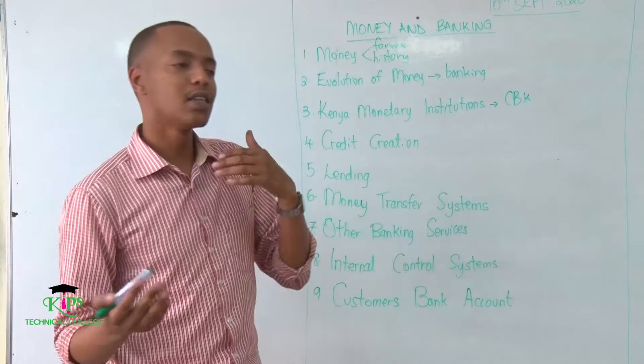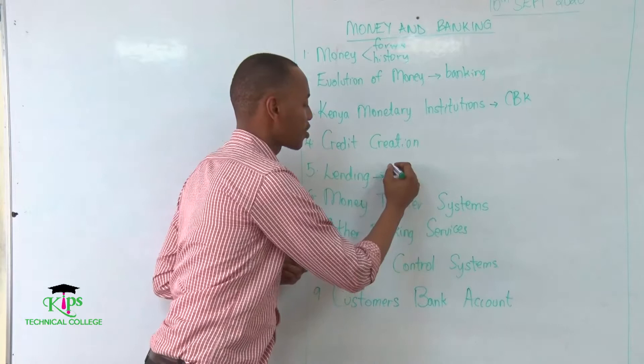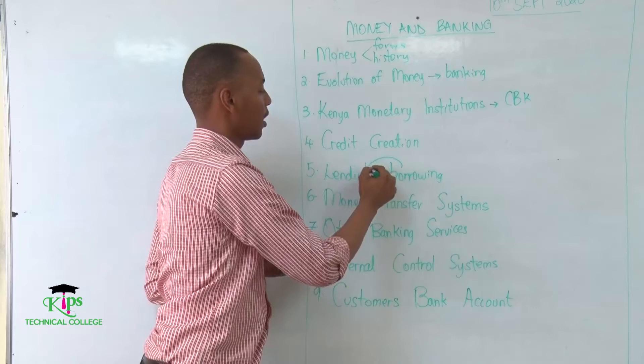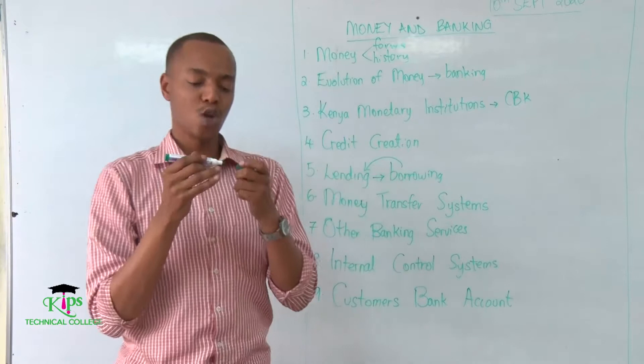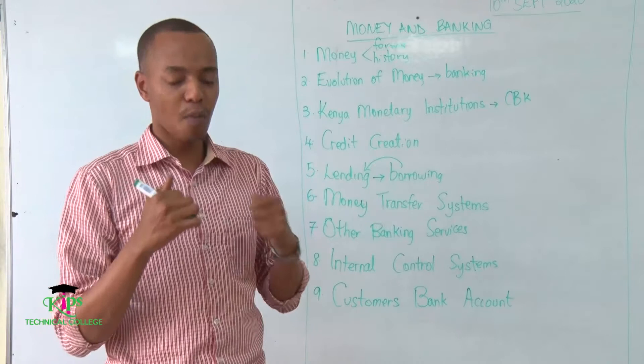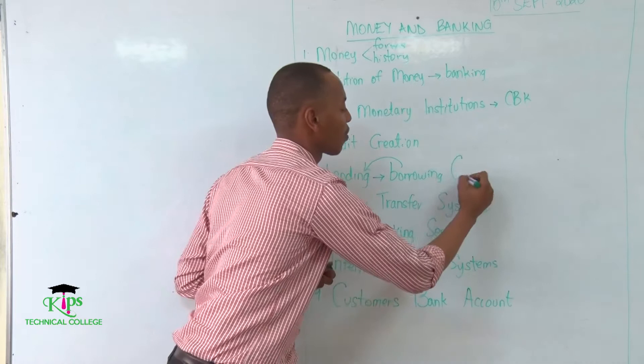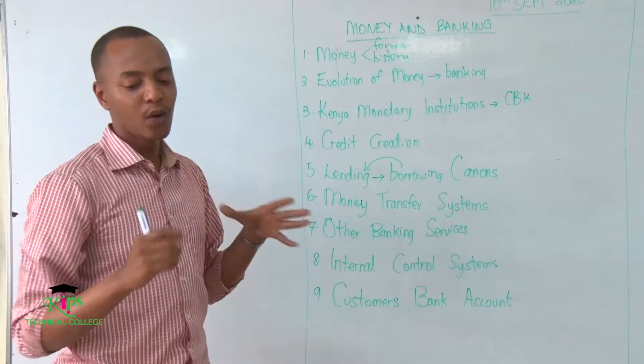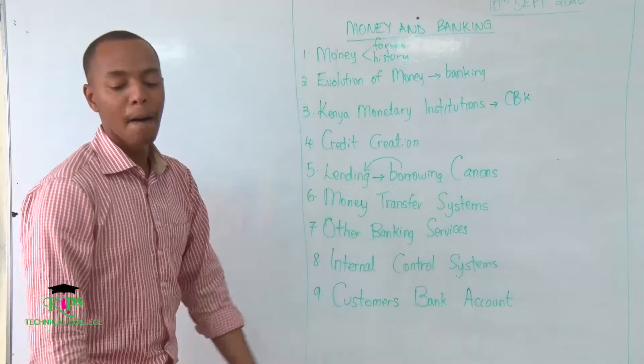Then we'll talk about lending — the opposite of borrowing, where if person A is borrowing, the other person is lending. We'll discuss how banks lend, what factors they consider for different customers to determine how much to lend them. We'll also talk about the canons, or principles, of lending, and then differentiate between different types of lending.